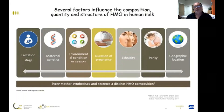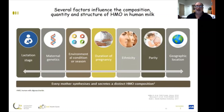The amount of HMOs depends on many factors. There are multiple independent variables which influence the HMO amount: lactation stage, maternal genetics, environment, season, duration of pregnancy, ethnicity, parity, and geographic location. So every mother synthesizes and secretes a very specific HMO composition, and there are multiple variables which will influence the composition of mother's milk in HMOs.